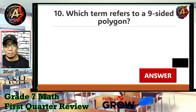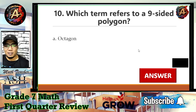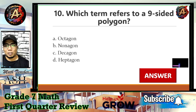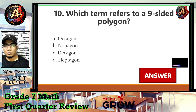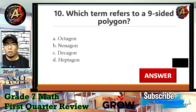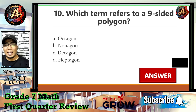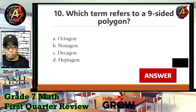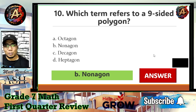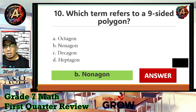Question number ten: which term refers to a nine-sided polygon? Is it A) octagon, B) nonagon, C) decagon, or D) heptagon? A nine-sided polygon is letter B — nonagon. Octagon means eight sides, decagon is ten sides, and heptagon is seven sides.